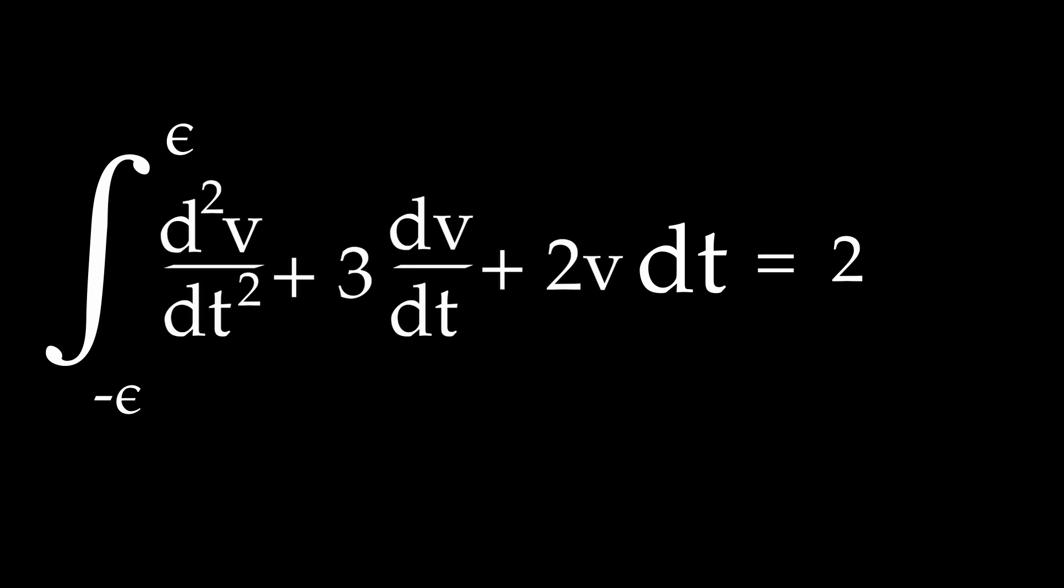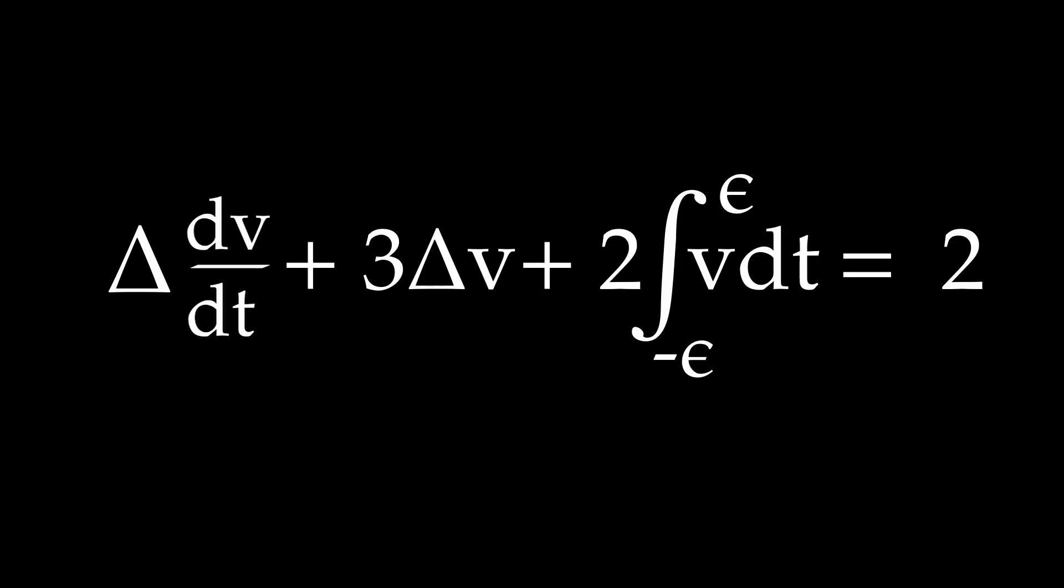On the left hand side, you'll get the difference in derivative of v, plus 3 times the difference in v, plus finally the integral of v from minus epsilon to epsilon.